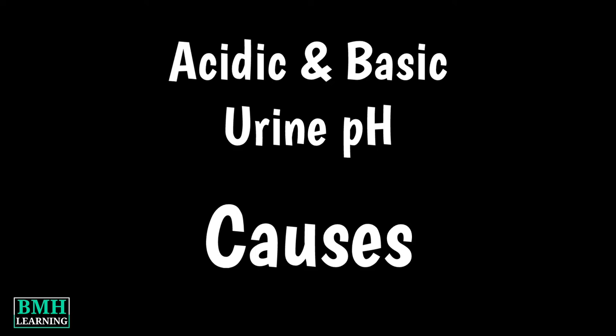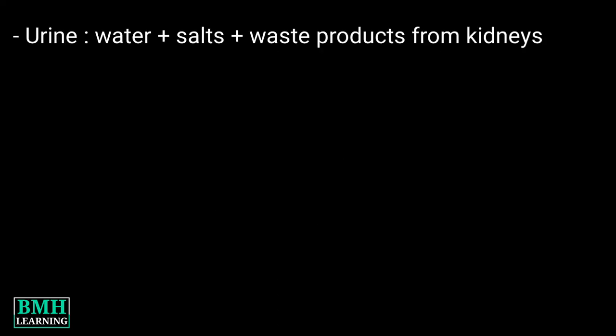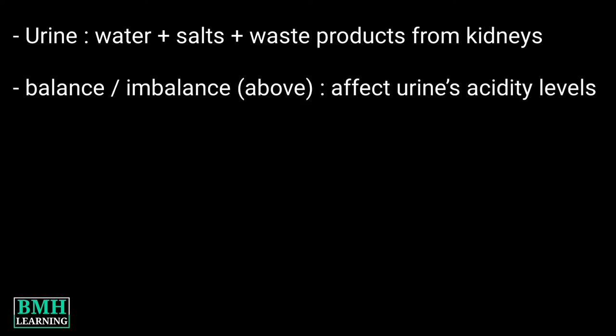Hello friends, welcome to BMH Learning. This video is about causes of acidic and alkaline pH of urine. Urine is made up of water, salts, and waste products from the kidneys. The balance of these compounds can affect urine's acidity.